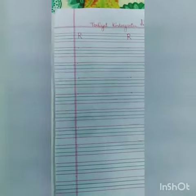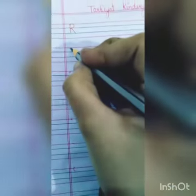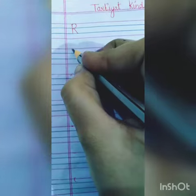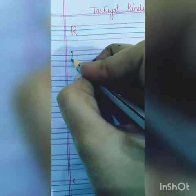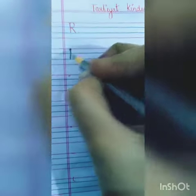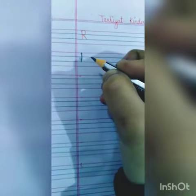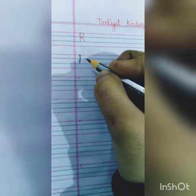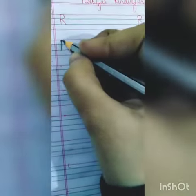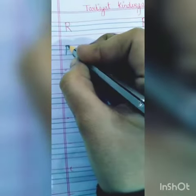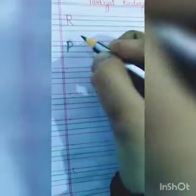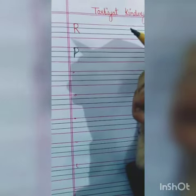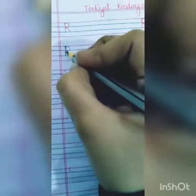First, you have to make a standing line like this. Then we draw half curve like this. Then slanting line like this.